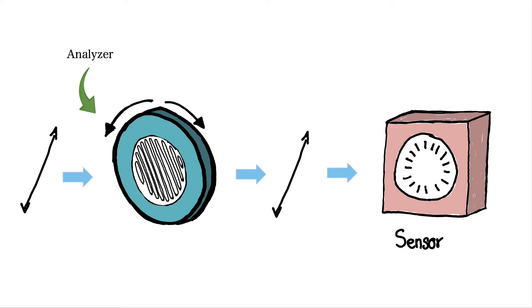By rotating the analyzer, you can change its alignment relative to the plane of the polarized light entering it.